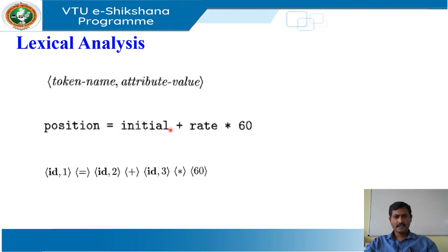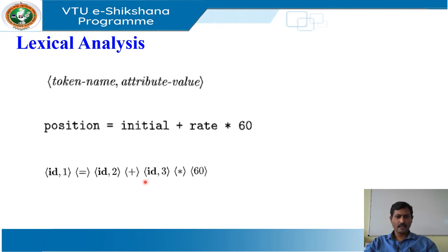'initial' is a lexeme that is mapped into the token id comma 2, where 2 points to the symbol table entry for initial. Plus is a lexeme mapped to the plus token. 'rate' is a lexeme mapped into the token id comma 3, where 3 points to the symbol table entry for rate. And 60 is a lexeme that is mapped into the token integer 60.